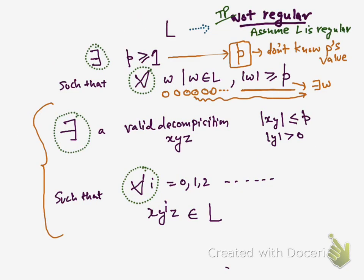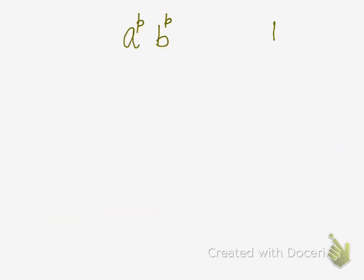Now we have picked the string and we need to show the conditions do not hold. The first condition says there exists one valid decomposition such that this condition holds. Valid decompositions are those which satisfy |xy| ≤ p and |y| ≥ 1. There can be a large number of valid decompositions satisfying these criteria.